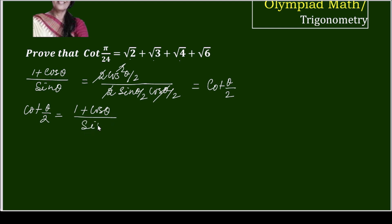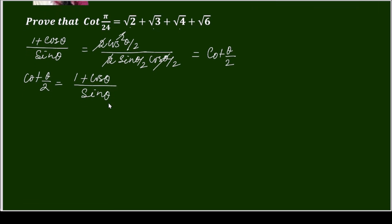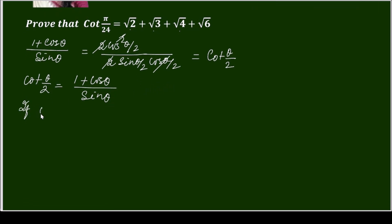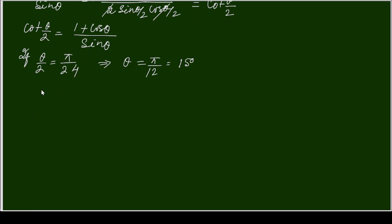I will apply this formula to evaluate cot(π/24). Setting θ/2 = π/24 means θ = π/12, which is 15 degrees. So I will need cos(15°) and sin(15°), which are not very difficult to find.